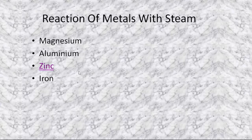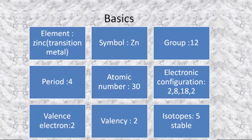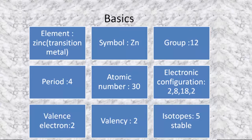Let's start with the video and discuss the reaction of zinc metal with steam for the generation or preparation of hydrogen gas. But before starting with the reaction, let's discuss some basics. Zinc is a transition metal with the symbol Zn and atomic number 30. It is located in the modern periodic table in group 12 and period 4. Its electron configuration is 2, 8, 18, 2, giving a valence electron count of 2. It has 5 stable isotopes.